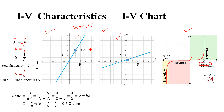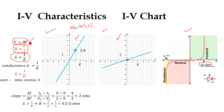Now, what values can we calculate from the slope of this chart? From Ohm's Law, voltage equals current times resistance. Solving for resistance, we get R equals V divided by I. Conductance is another term, which is the reciprocal of resistance. If we substitute R equals 1 over G into the equation and solve, we get conductance G equals I divided by V.